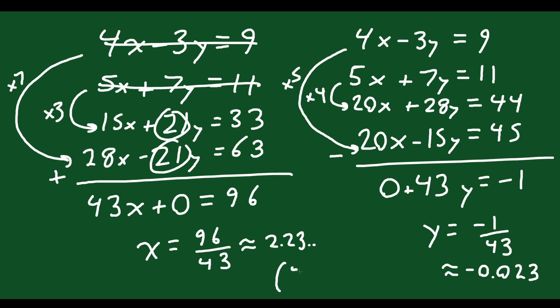But overall, your answer is going to be 96 over 43, negative 1 over 43. That is the point in which these two equations cross over or intersect. Okay, let's do another one. Let's go back and do substitution again.